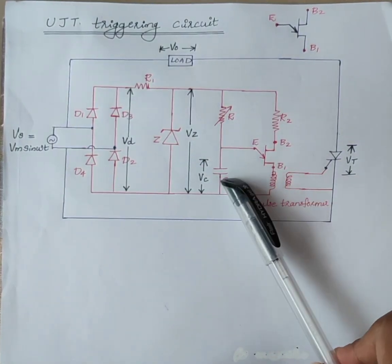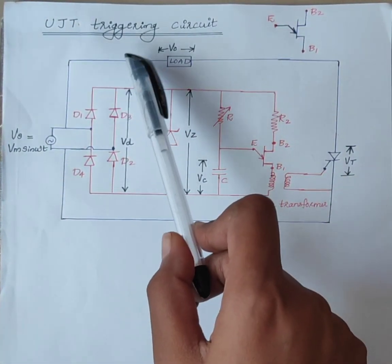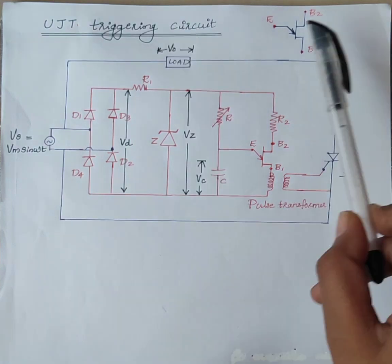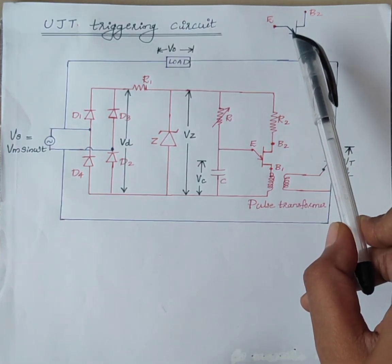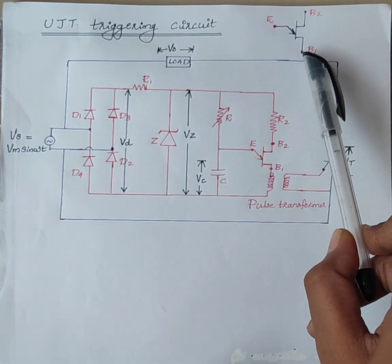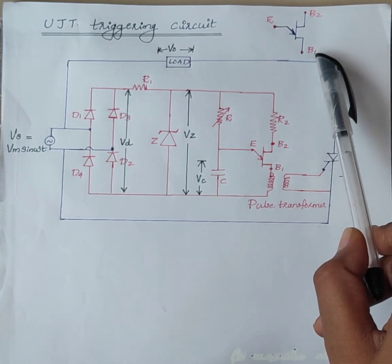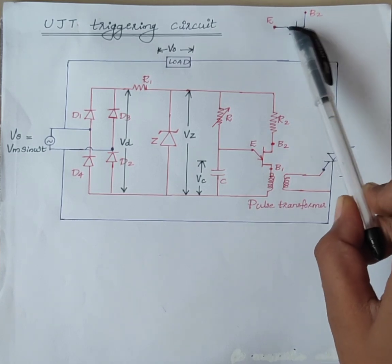Hi students, today we will discuss UJT triggering circuit. UJT, a uni-junction transistor, is an electronic semiconductor device that has only one junction.